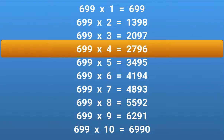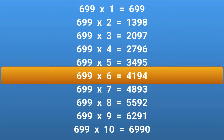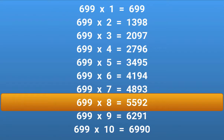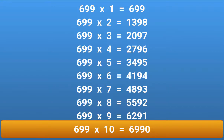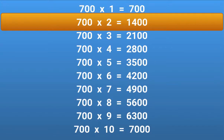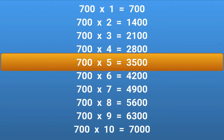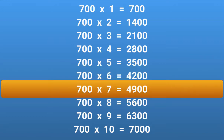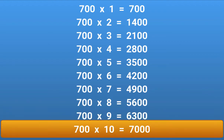699 × 4 = 2796. 699 × 5 = 3495. 699 × 6 = 4194. 699 × 7 = 4893. 699 × 8 = 5592. 699 × 9 = 6291. 699 × 10 = 6990. 700 × 1 = 700. 700 × 2 = 1400. 700 × 3 = 2100. 700 × 4 = 2800. 700 × 5 = 3500. 700 × 6 = 4200. 700 × 7 = 4900. 700 × 8 = 5600. 700 × 9 = 6300. 700 × 10 = 7000.